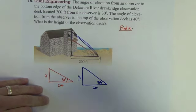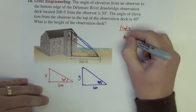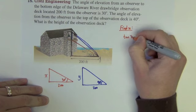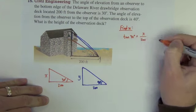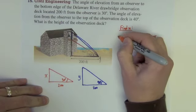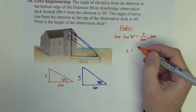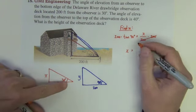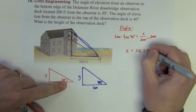So to find x, x is opposite, 200 is adjacent. So we are going to use tan of 30 degrees equals opposite over adjacent. Multiply the 200 across out of the denominator. So we get x equals 200 times the tan of 30. I get 115.5 feet.